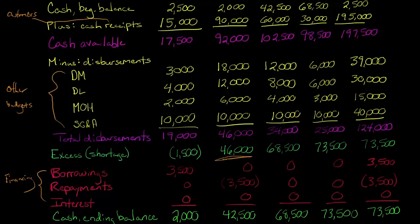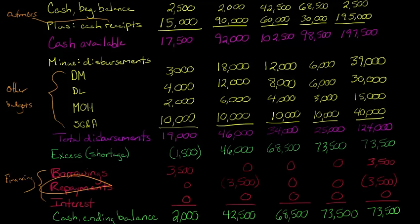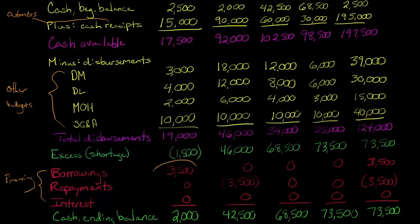This time it's an excess — we have more cash than we spent. We have $46,000 left over, so we don't need to borrow anything. Instead, we do a repayment of $3,500 to repay the loan to the family member. The $3,500 is shown in parentheses because it's a cash outflow — this zeros out the borrowing. So even though we have an excess of $46,000, we subtract the $3,500 repayment, giving us an ending balance of $42,500.